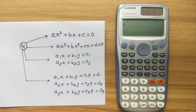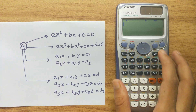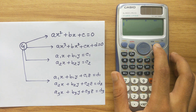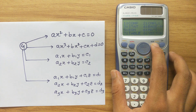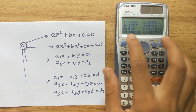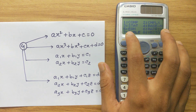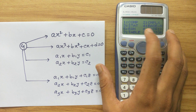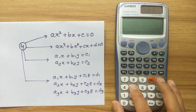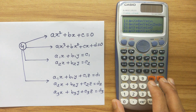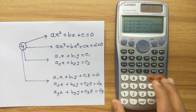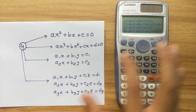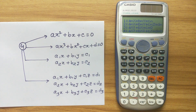First of all, let's find where to go to solve these equations. Press the Mode button and you will get eight options. Option number five is EQN or Equation. Press 5 and you will get four options corresponding to the four types of equations.